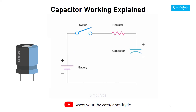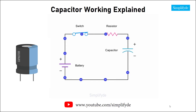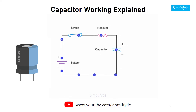A capacitor must be attached to a closed circuit with an energy source such as a battery in order for it to store energy. When the switch is closed, electrons flow and charge builds up on the capacitor's plates. This causes the voltage across the capacitor to increase.